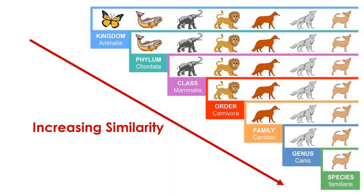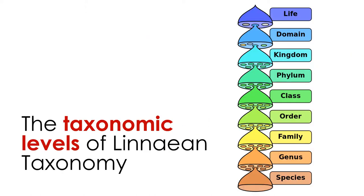Groups are based on the similarities of species. If two species are similar, they are combined into a genus; if two genera are similar, they are combined into a larger group, and so forth. For example, dogs and wolves make up the genus Canis; dogs, wolves, and foxes make up the family Canidae. Each individual taxon has certain defining characteristics or characters. However, when it comes to figuring out evolutionary relationships, taxonomy has a critical limitation.